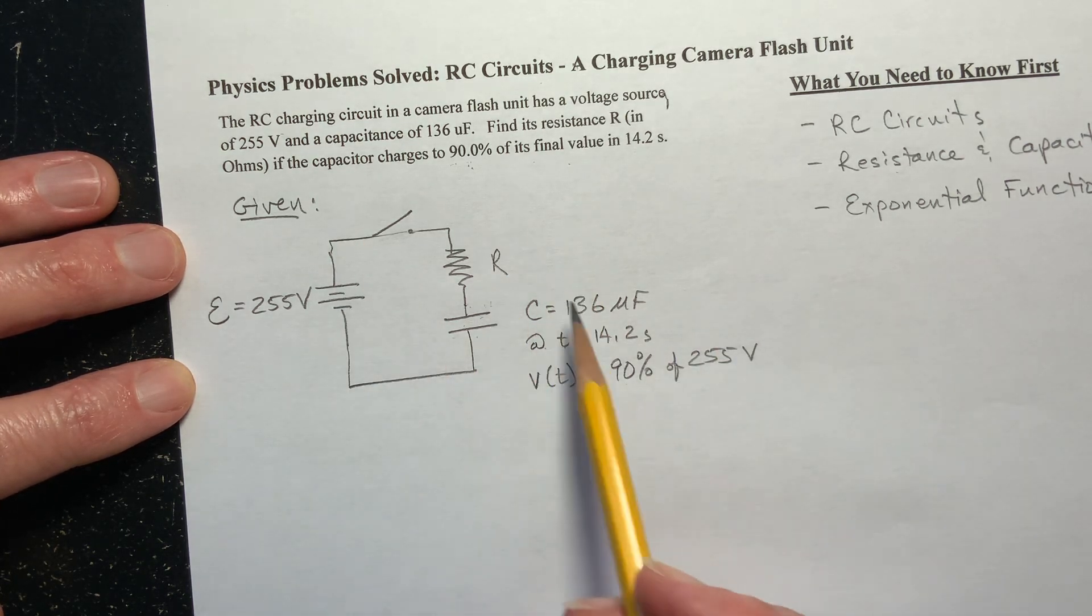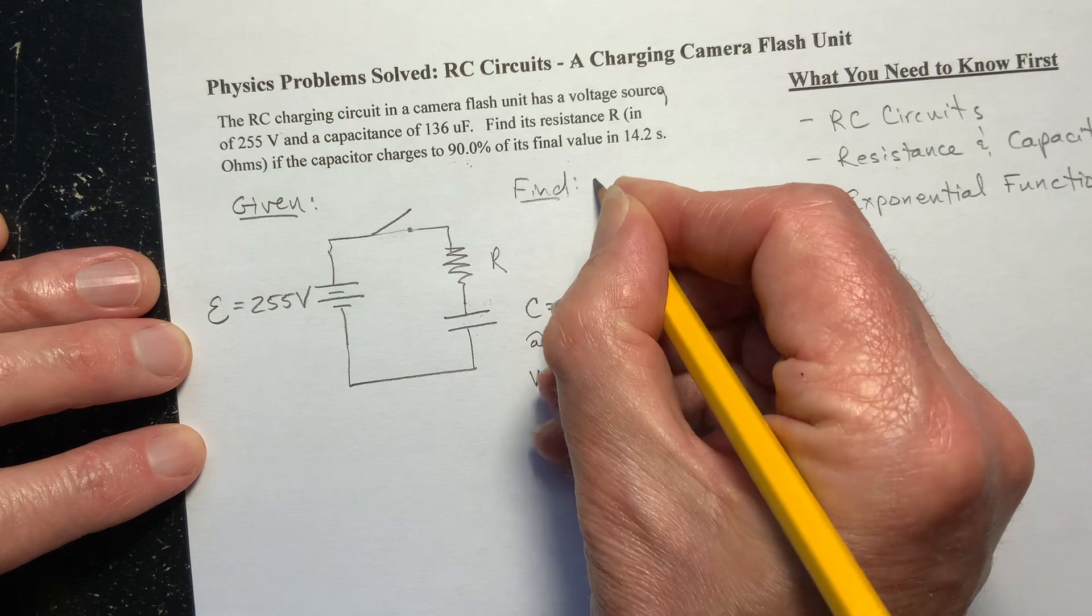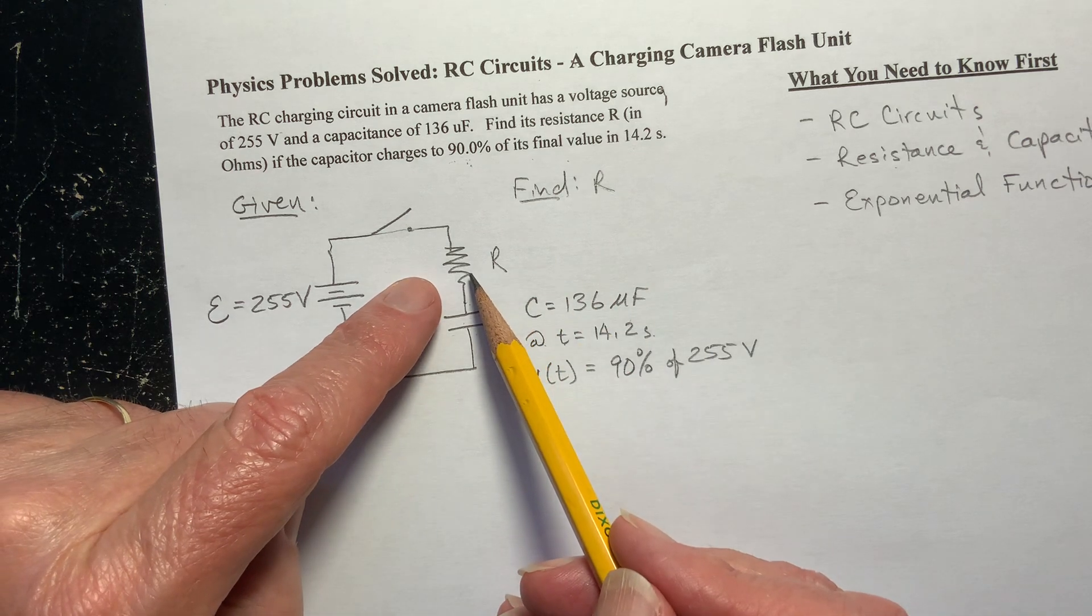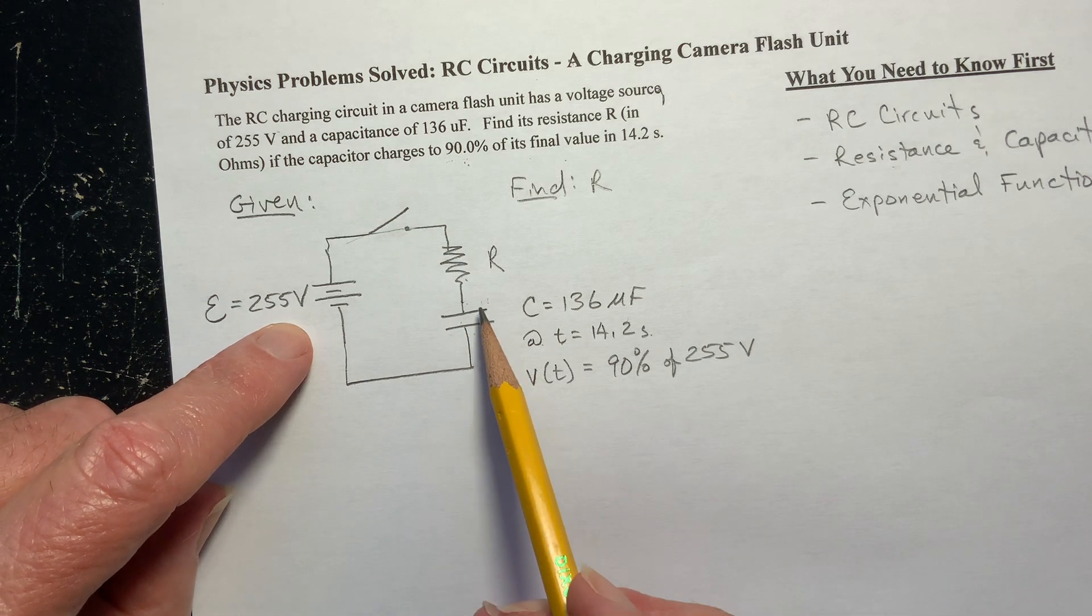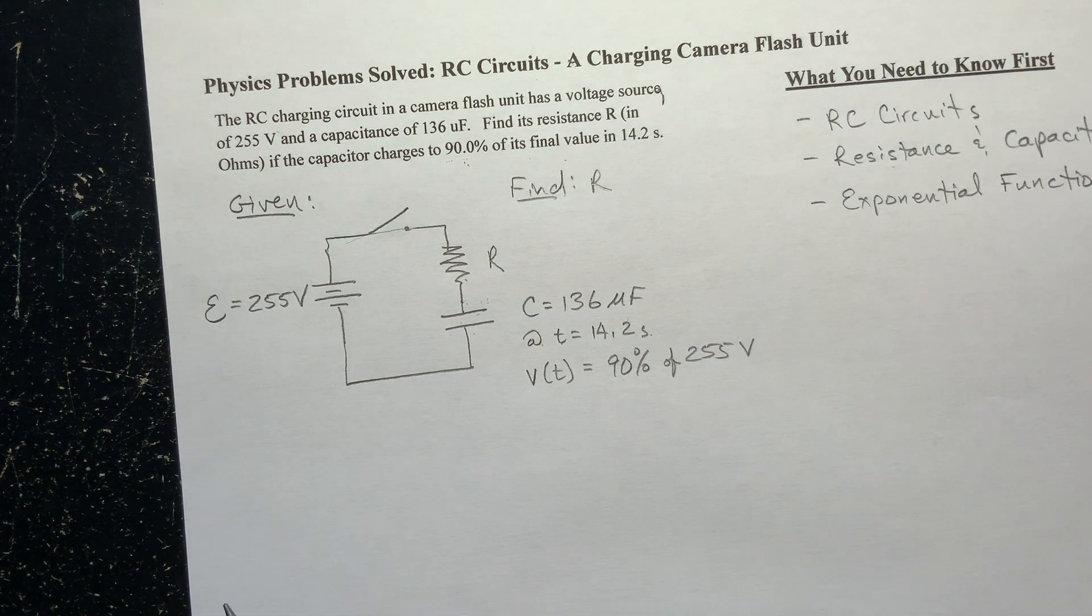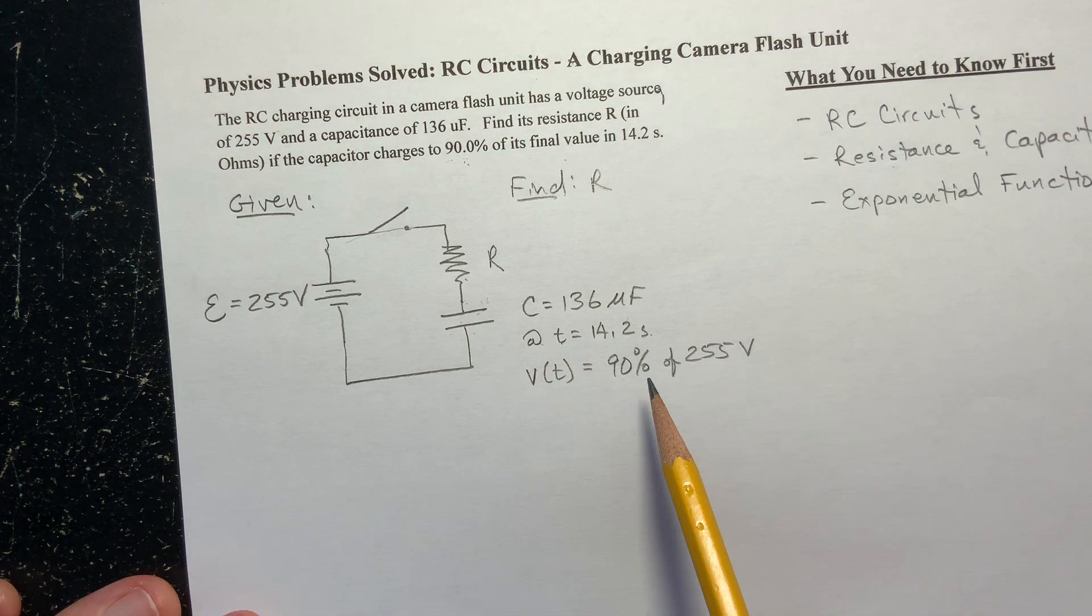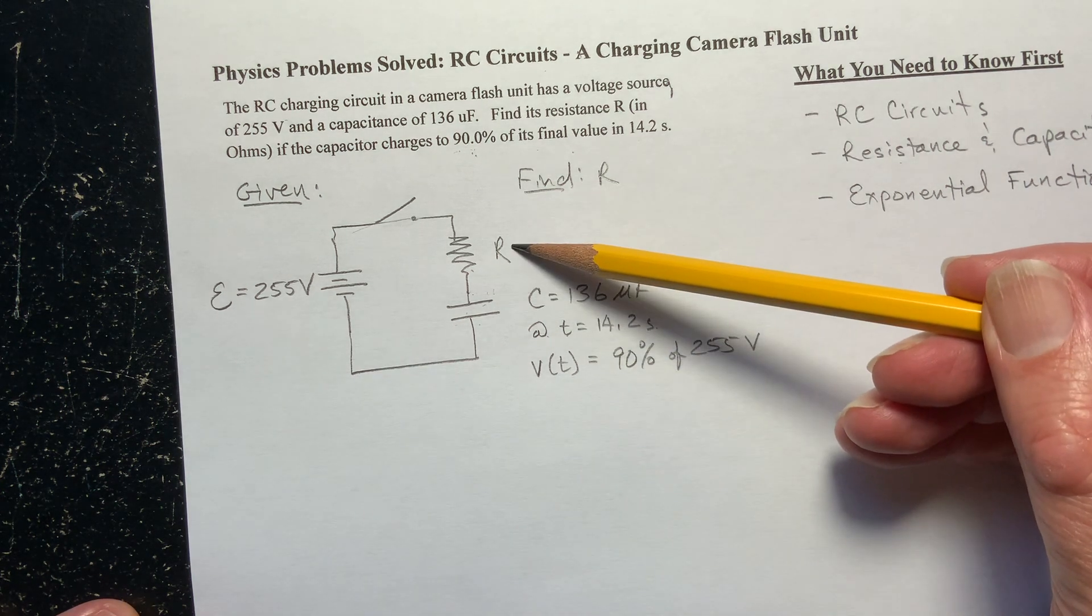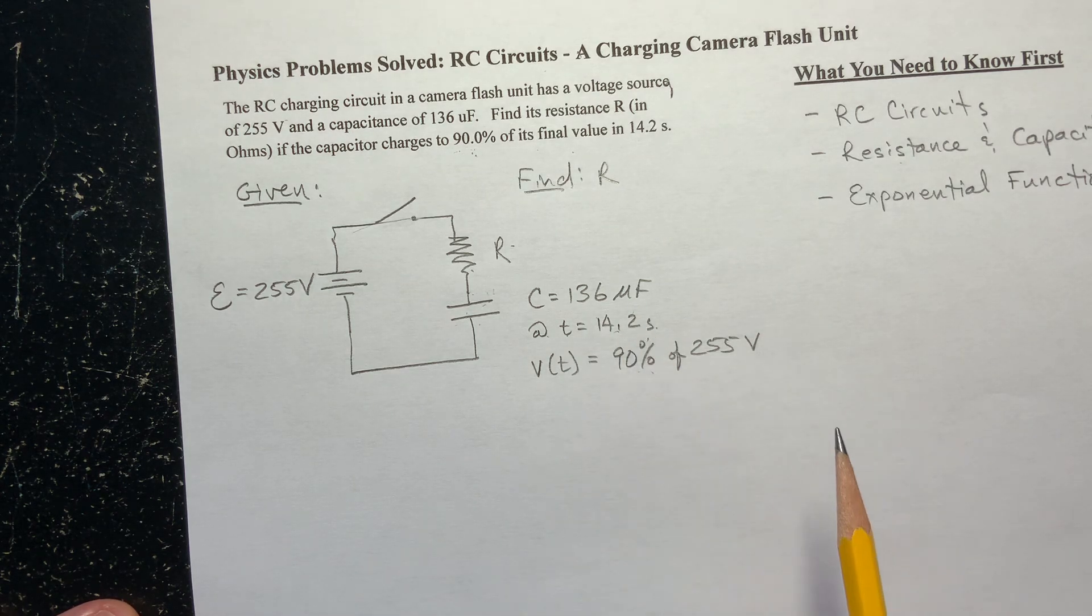So if it's reached 90% of its charge, it's got 90% of the possible voltage on it. At T equals 14.2 seconds, the voltage on the capacitor is equal to 90% of 255 volts. Now, what are we trying to find? We want to know what resistance do I need to put in series with this capacitor to give us this time. Because the greater the resistance, the lower the current going in, so it takes longer to fill that capacitor. If the resistance is too low, we flood this capacitor with charge very quickly, and it fills up much faster than the 14.2 seconds given. You need just the right resistance to have 90% of the total voltage after 14.2 seconds.